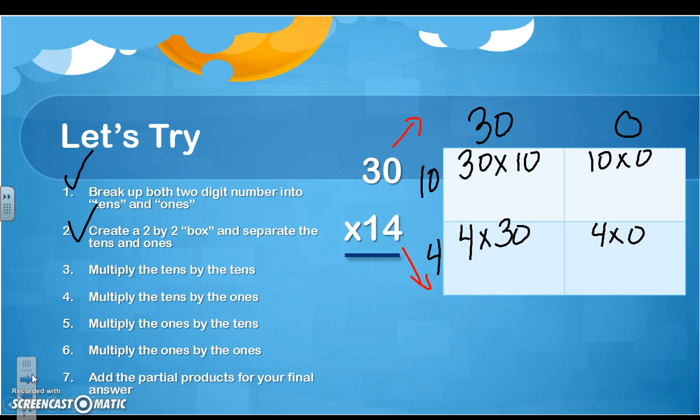So 30 times 10. Let me circle my basic fact and triangle my 0. 3 times 1 is 3 plus 2 more 0s. 4 times 3 is 12. And I have one more 0. 10 times 0 is 0. And 4 times 0 is 0.